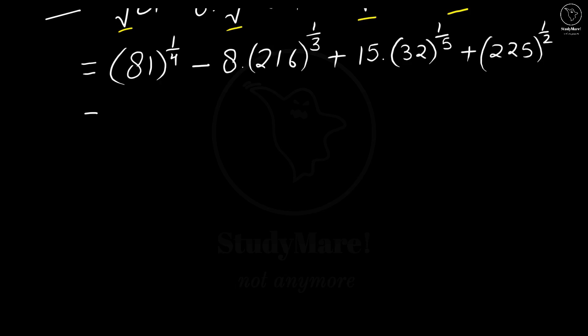Now, in the next step we have to simplify it further. We have 81 here, 216 here, 32 here and 225 over here. If we break it down in its prime factors and write these prime factors in terms of their power, it would be easy for us. So let us do this.